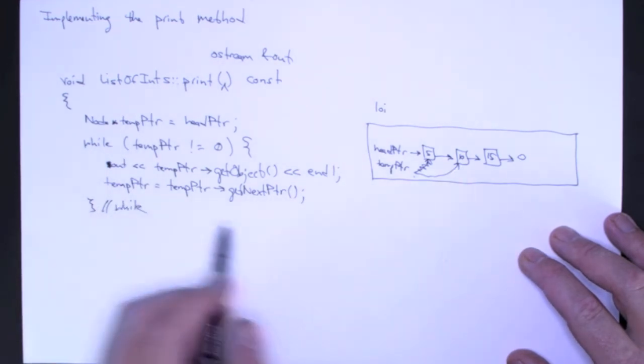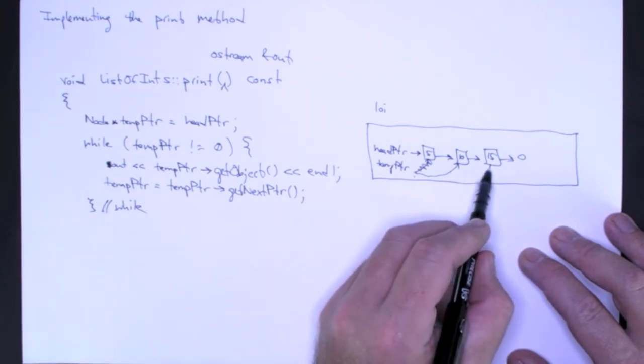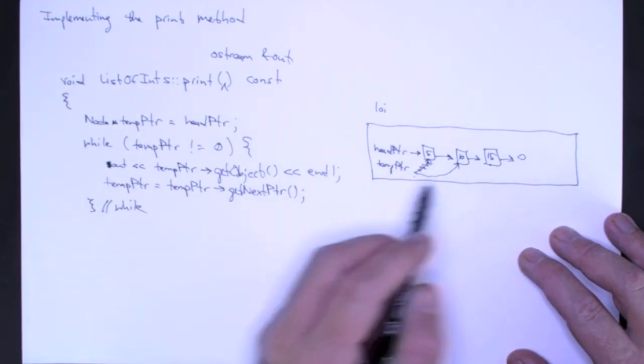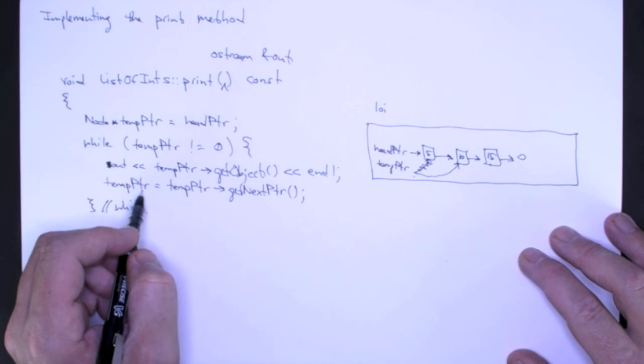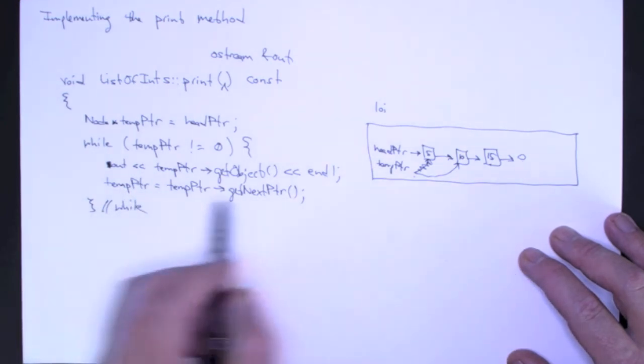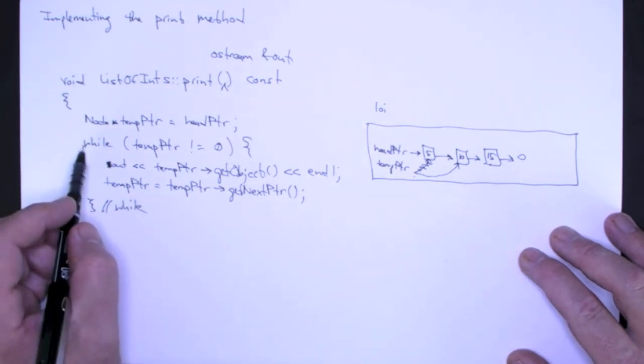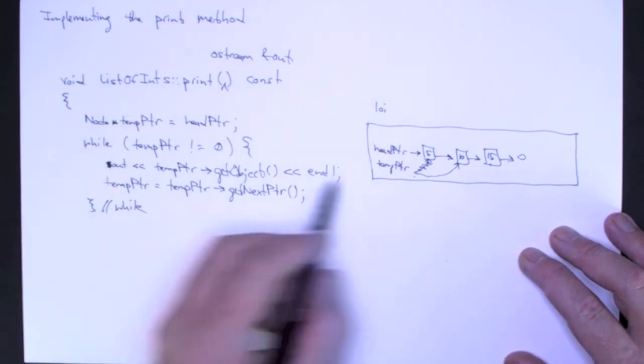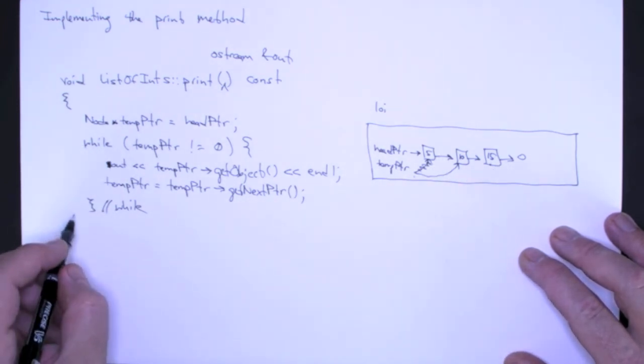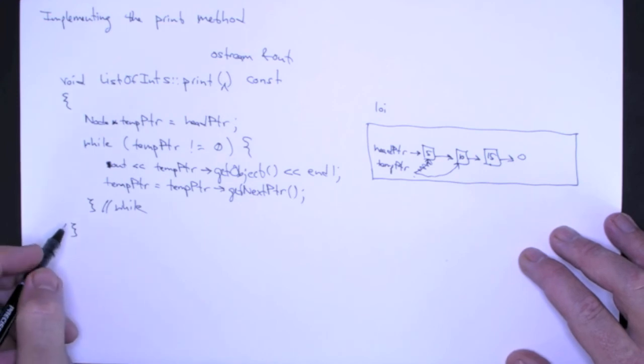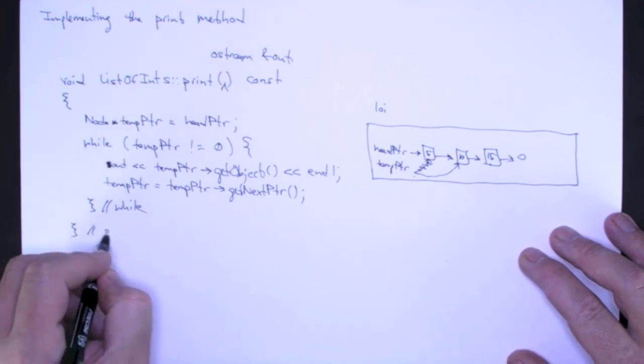Next I'll print 10, I'll advance the pointer, print 15, advance the pointer. At that point temp pointer becomes null. That satisfies my termination condition, but I've printed all the elements. And at that point I can terminate the execution of print.